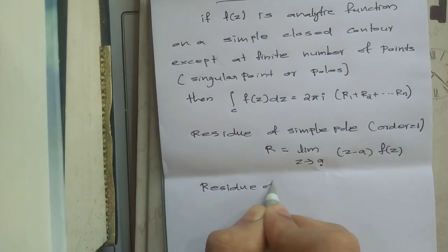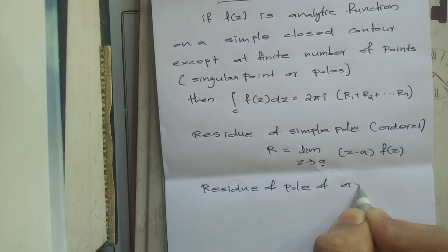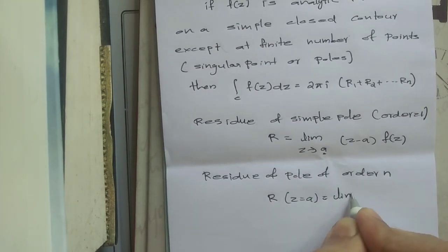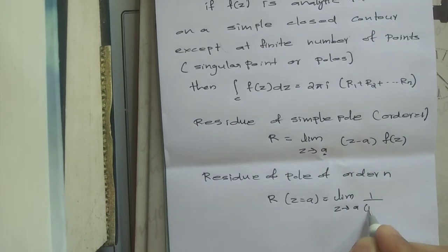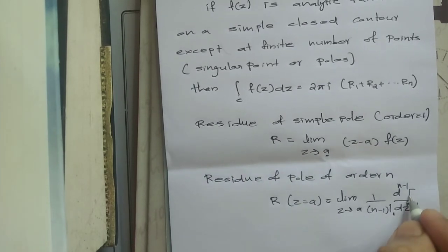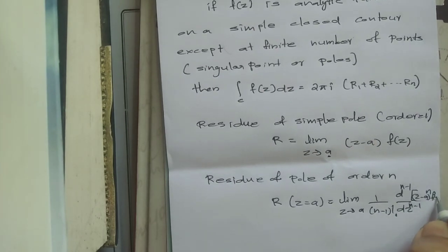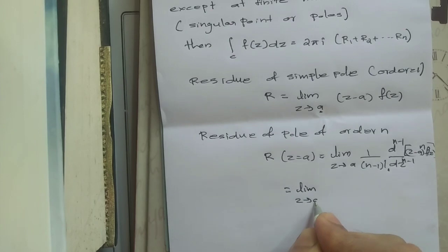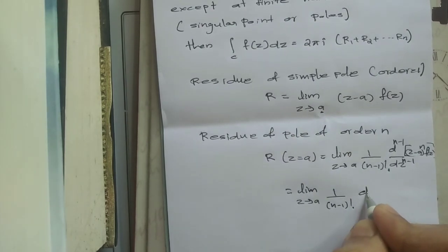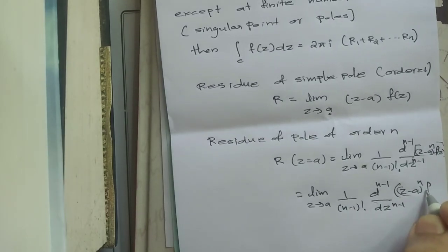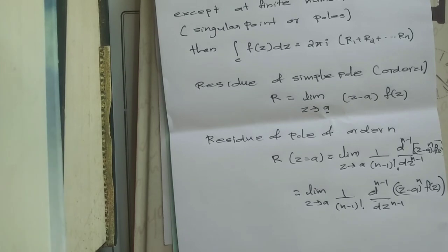Next, the residue of a pole of order n: R at z = a equals the limit as z tends to a of (1/(n−1)!) · d^(n−1)/dz^(n−1) of [(z − a)^n · f(z)]. Here, a is the point at which the function becomes singular.